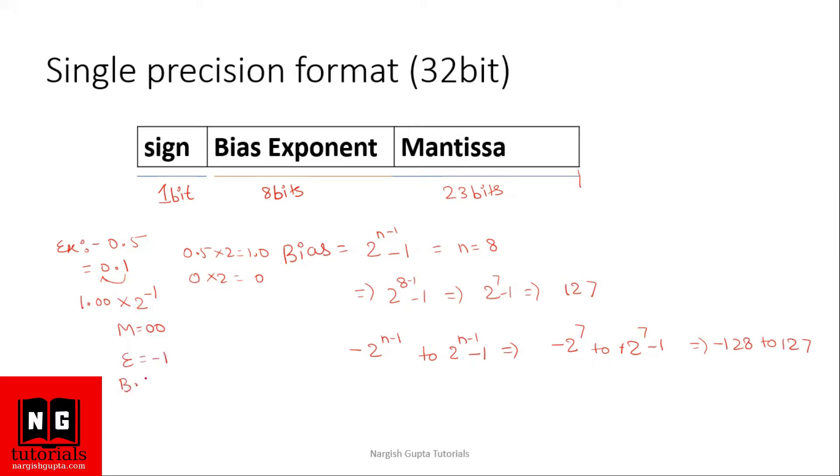We need to find out the biased exponent. The value of our bias is 127 and the actual bias is minus 1 plus 127, which is 126. And the binary equivalent of which will be 01111110.